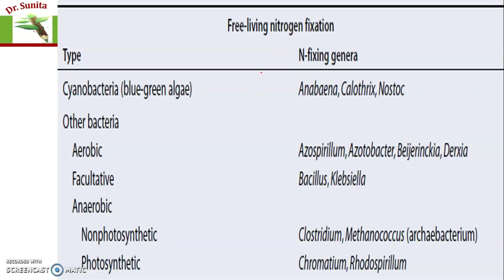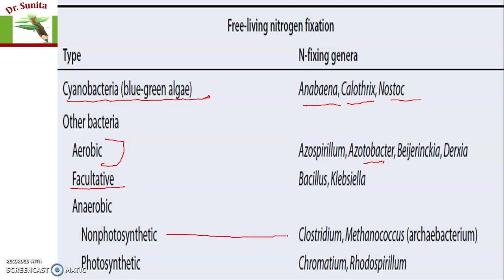The list of free-living nitrogen-fixing bacteria includes: cyanobacteria (also named blue-green algae), with examples such as Anabaena, Azolla and Anabaena, Calothrix, and Nostoc. Other bacteria include aerobic bacteria such as Azospirillum and Azotobacter; facultative bacteria that can grow both aerobically and anaerobically, such as Bacillus and Klebsiella; and anaerobic bacteria — non-photosynthetic such as Clostridium or Methanococcus (also named archaebacteria), and photosynthetic such as Chromatium or Rhodospirillum.